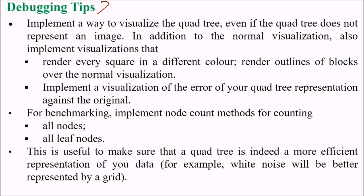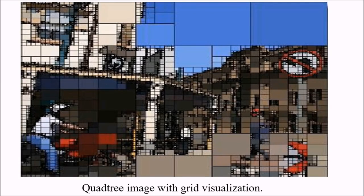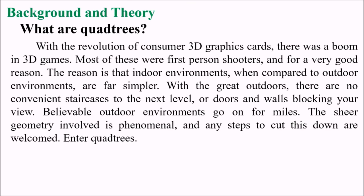For debugging, implement a way to visualize the quad tree even if it does not represent an image. In addition to normal visualization, implement one that renders every square in a different color and shows outlines of blocks. Also implement a visualization of the error of the quad tree representation against the original. For benchmarking, implement node count methods for counting all nodes and all leaf nodes. This is useful to ensure the quad tree is indeed a more efficient representation of your data — for instance, white noise will be better represented by a grid.